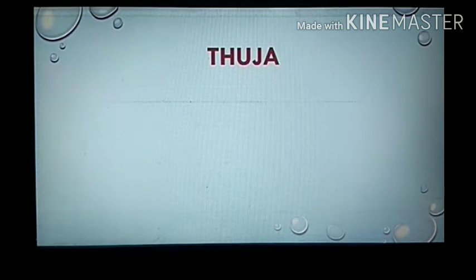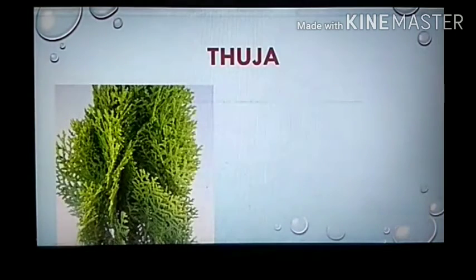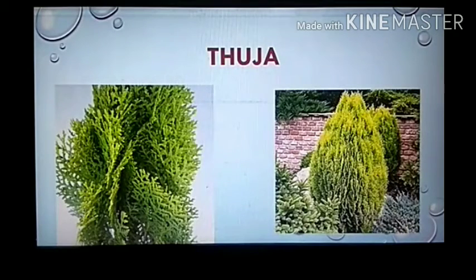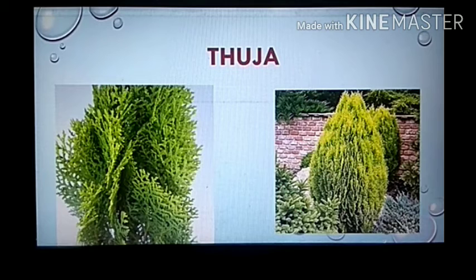An example of a gymnosperm is Thuja, commonly found in gardens and also called Morpankhi. This is a picture of the Thuja plant. At the back of the leaves, small ovules are present and they are naked — so these are naked-seeded plants.